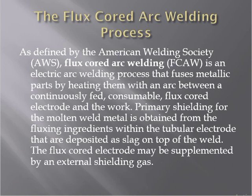Primary shielding of the molten weld metal is often provided by fluxing ingredients within the tubular electrode, which are deposited as slag on top of the weld. When the arc is created and welding is continuous, flux comes from inside the tubular electrode. The flux-core electrode may also be supplemented by an external shielding gas supplied through the same area or a separate tube.